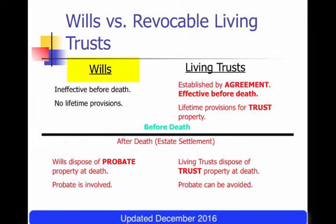When it comes to your will, before it is effective, it has to be taken down to the probate court — and this is after you die. The will has to be taken down to the probate court, and the court makes a finding that it is, in fact, your last will and testament.